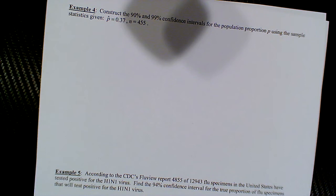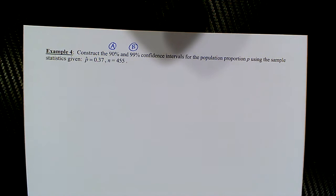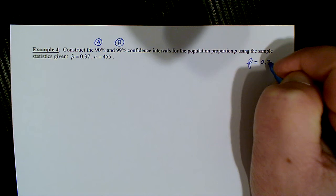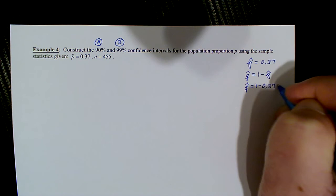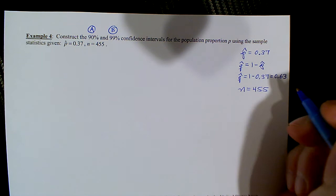For the next example, we'll construct both a 90% and a 99% confidence interval — call these part A and part B. For both, p-hat = 0.37, so q-hat = 1 minus 0.37 = 0.63, and n = 455.